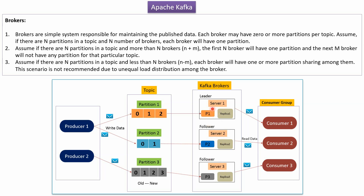Brokers are simple systems. The responsibility of a Kafka broker is to maintain the published data. Each broker may have 0 or more partitions per topic. If there are 3 partitions in a topic and 3 brokers, each broker will have 1 partition. If there are 3 partitions and 5 brokers, the first 3 brokers will each have 1 partition, and the remaining 2 brokers will have no partition for that topic.